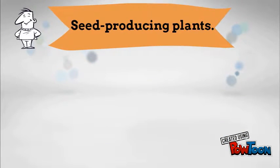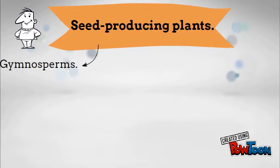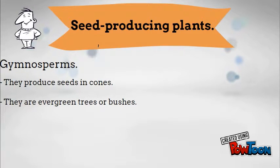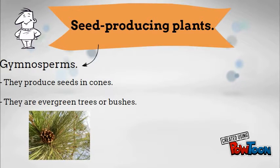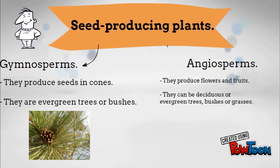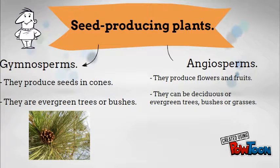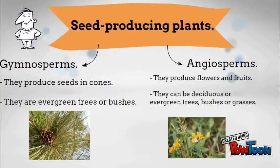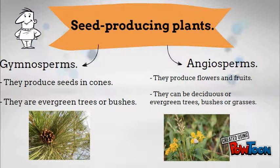And now we're talking about seed-producing plants. They can be gymnosperms — they produce seeds in cones and they are evergreen trees or bushes. And angiosperms — they produce flowers and fruits. They can be deciduous or evergreen trees, bushes, or grasses.